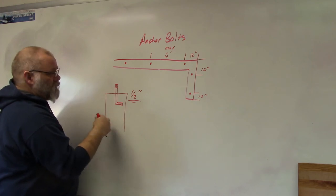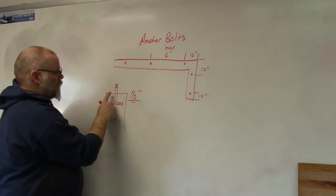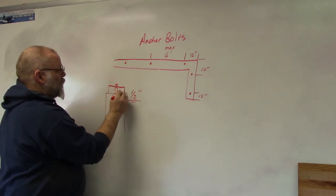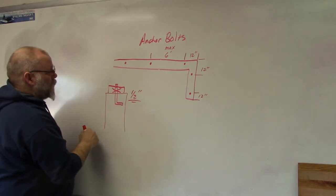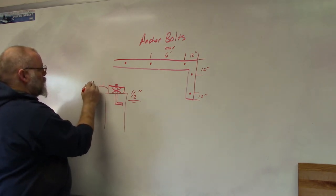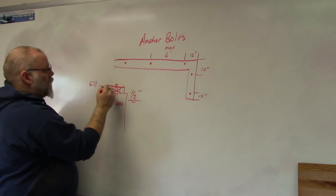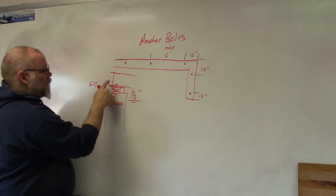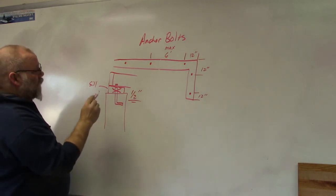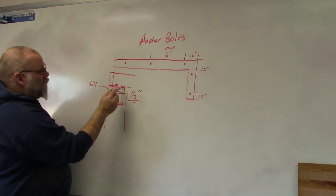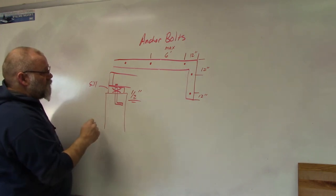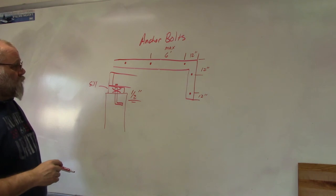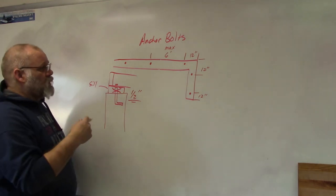Once the concrete sets up, it will stick out and then you attach your sill plate or sill to the anchor bolt. Then you build on top of that with your floor joist and your header joist and you go on up. So the anchor bolt is attaching the wooden part of your structure to the concrete part of your structure.